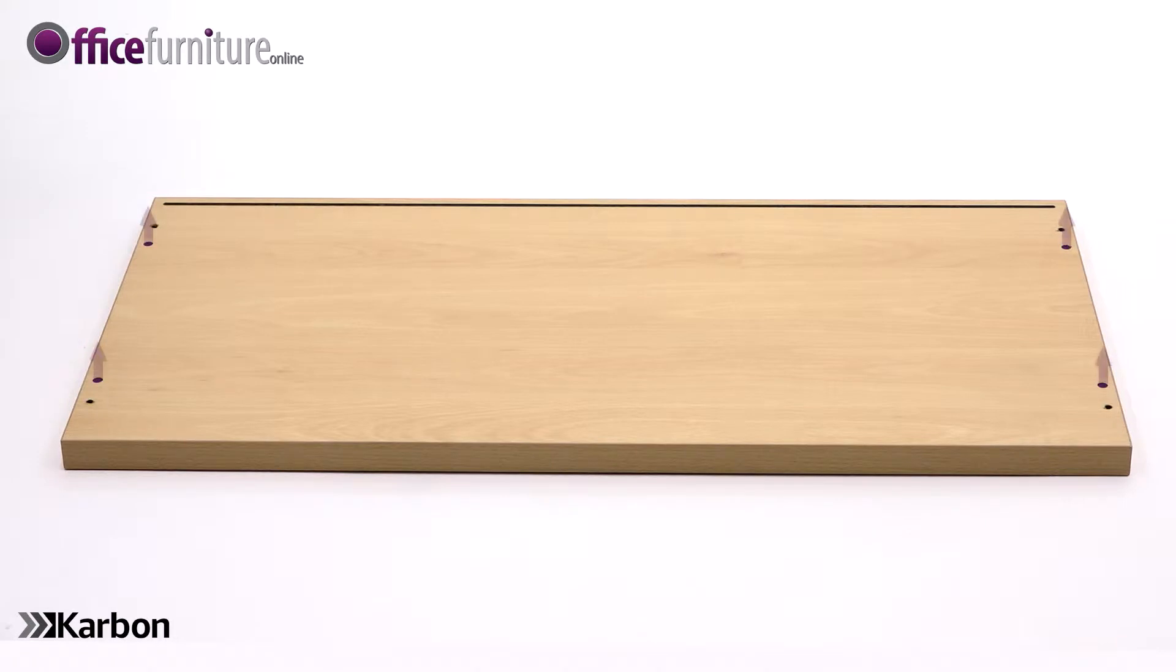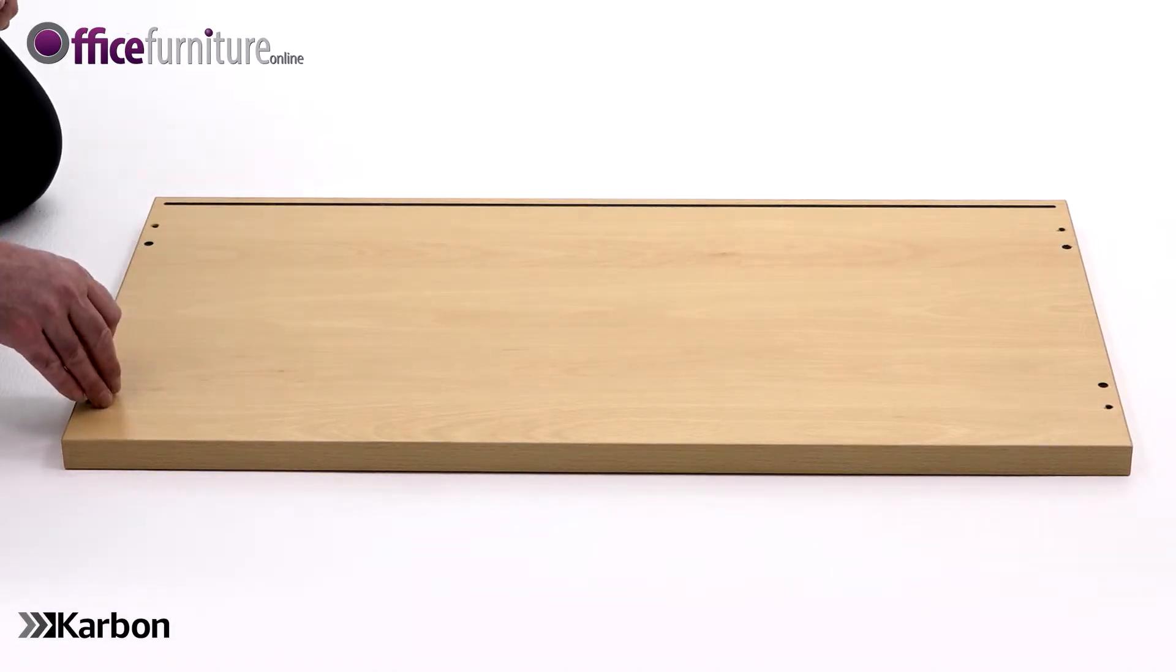Now take the top panel and again lie it on the floor with the holes facing upwards, and insert four dowels into the inner holes of the panel as shown.